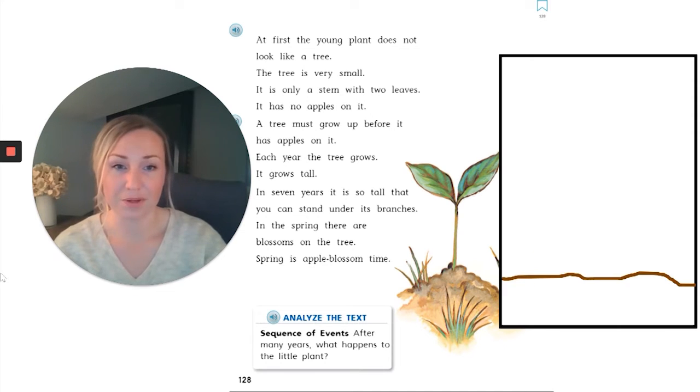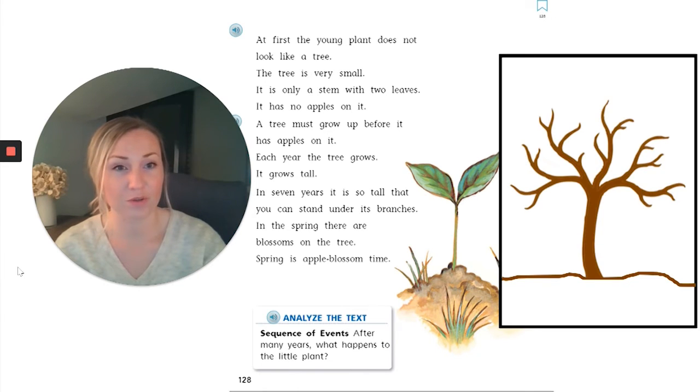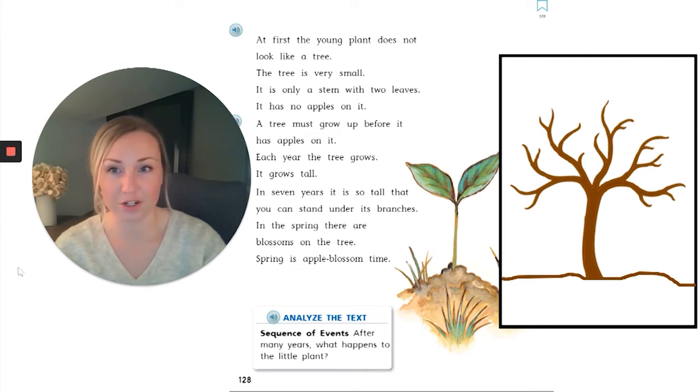Okay, so going back to our diagram where we have our soil, we just heard another fact. That seed that was under the soil eventually grows above the ground. It starts small like the picture in our story. But then eventually, at least by seven years, it's tall enough that we can stand under the branches. So I know that we're going to have a larger tree with a trunk and branches.